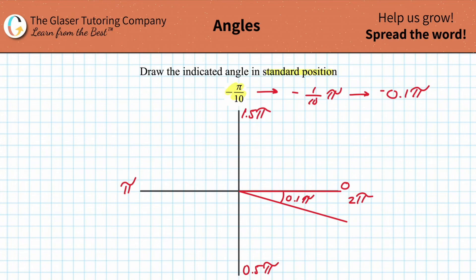If you then had to find the angle going in the counterclockwise direction, you could have just taken 2 pi because that's the full circle and subtracted 0.1 from it. In other words, the full angle here would have been 1.9 pi, and you can always convert that into a fraction if you need.